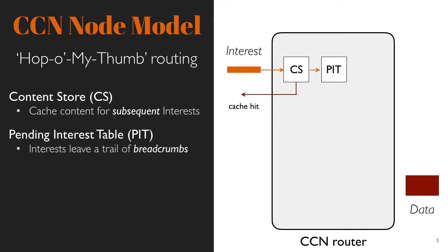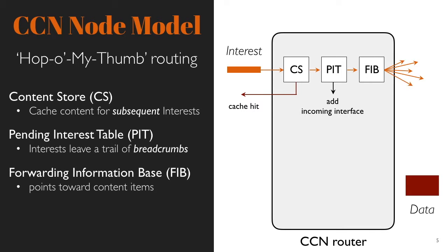Otherwise, the router creates or updates the PIT table, which lists the interfaces on which an interest for the same content was received. These states act as breadcrumbs that the data messages will follow back to the source. Once the PIT is updated, the router propagates the interest according to a FIB. Once the content is located, a copy is sent back to the querier by following the states left in the PIT and by buffering a copy of the content in the CS.